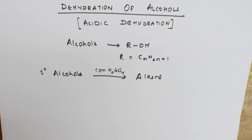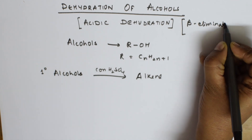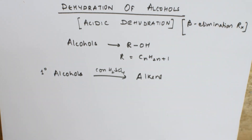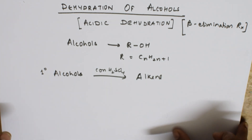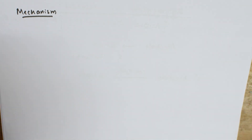One important thing: this is also an example of a beta elimination reaction. We'll see what beta elimination means when we go through the step-by-step reaction and mechanism. So primary alcohol is getting converted to an alkene in the presence of an acid medium — that's why we call it acidic dehydration — because sulfuric acid is a dehydrating agent.